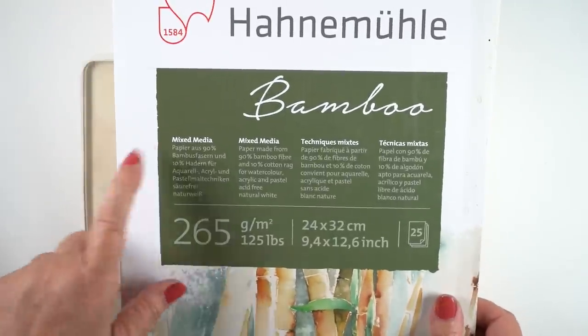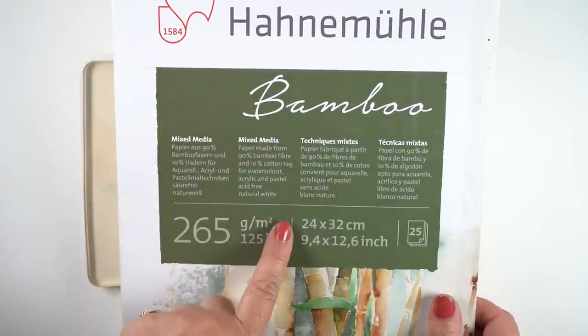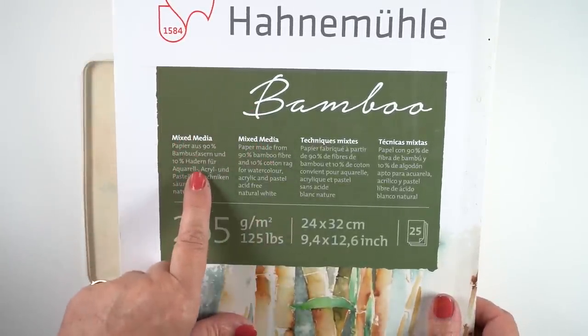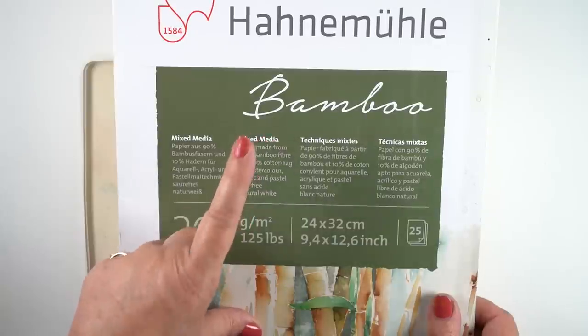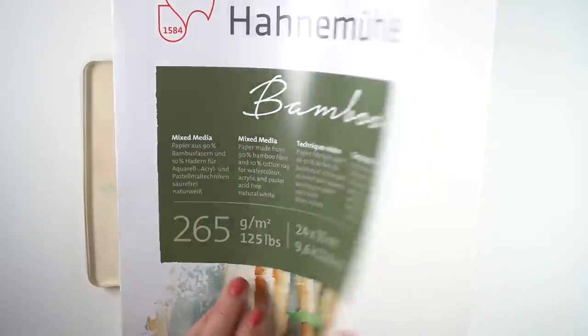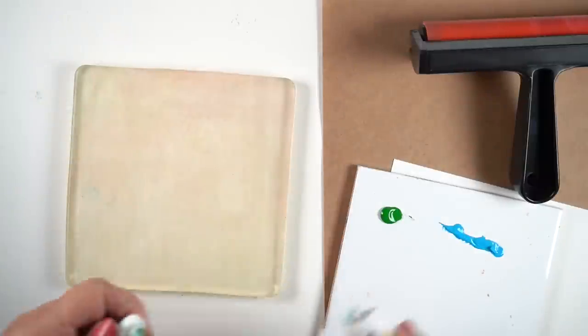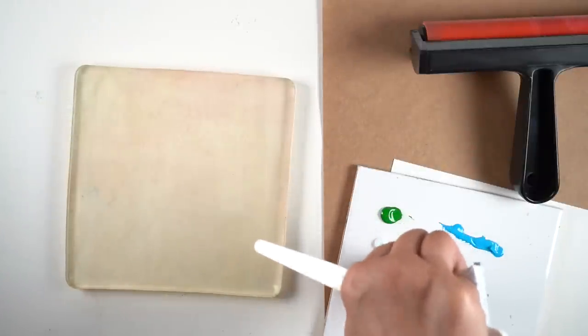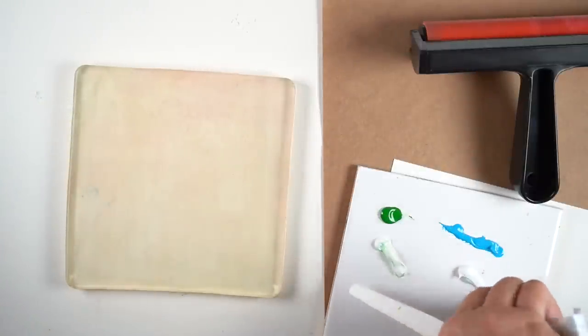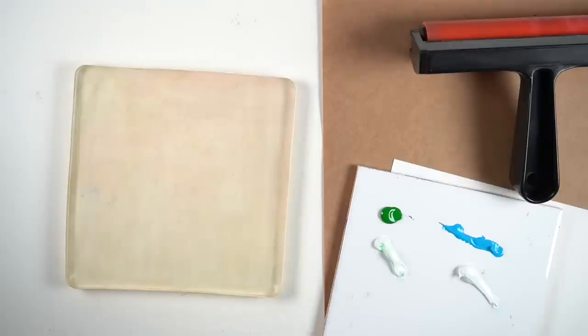I decided to use this Hanamula bamboo paper. It's terrible for every other thing that I've tried it for—I have not enjoyed watercolor on it, I don't really like pen and ink on it all that much. So let's see if printing on it is going to work because I just want to use it up. I started by trying to make some cards inspired by one of my holiday inspiration cards.